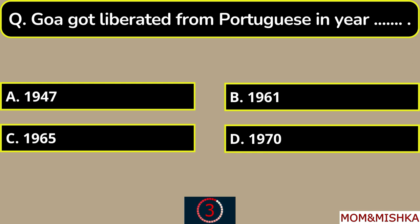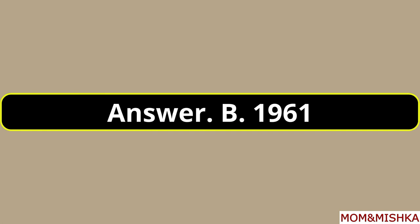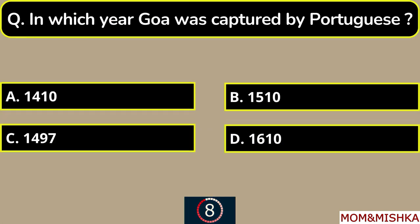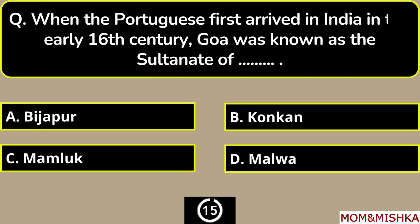Goa got liberated from Portuguese in year blank — in year 1961, option B. In which year was Goa captured by Portuguese? In year 1510, option B.